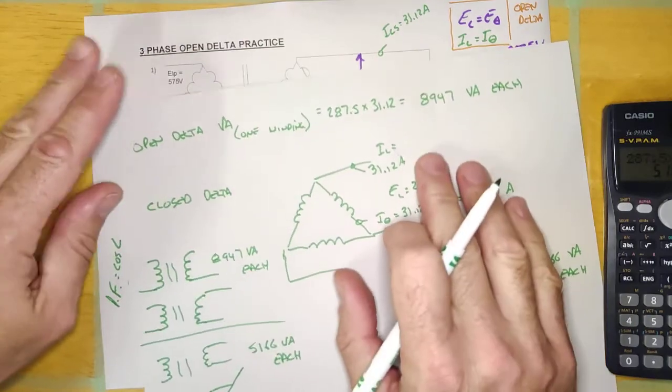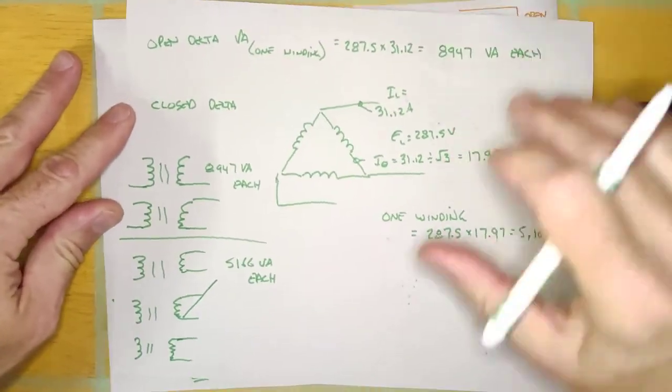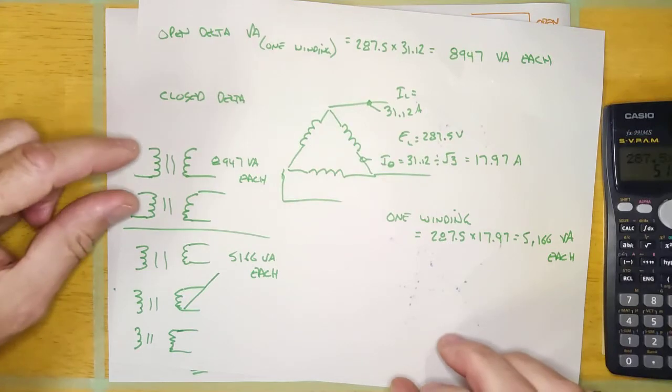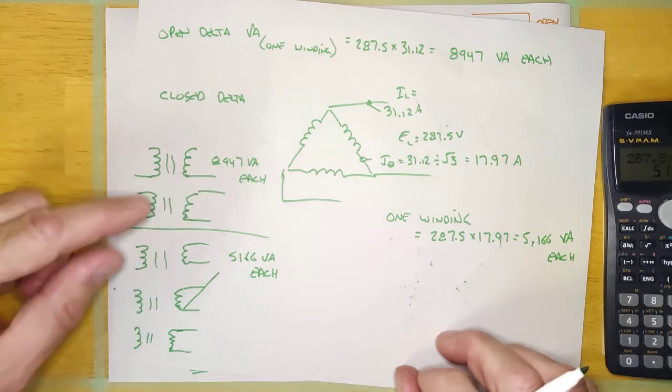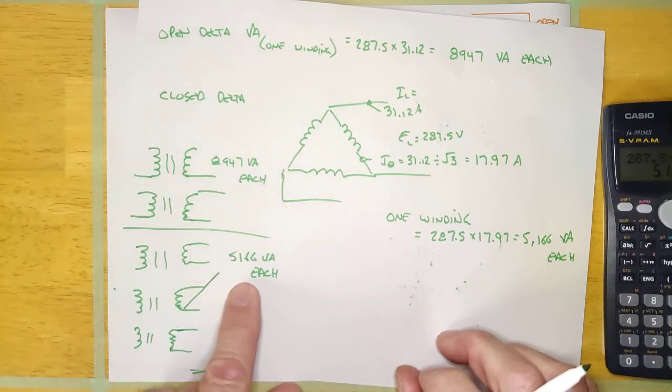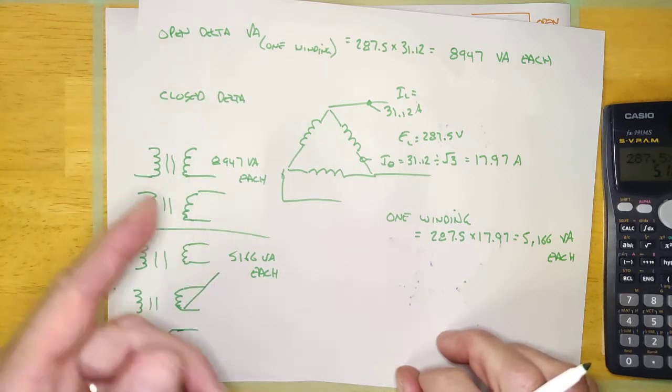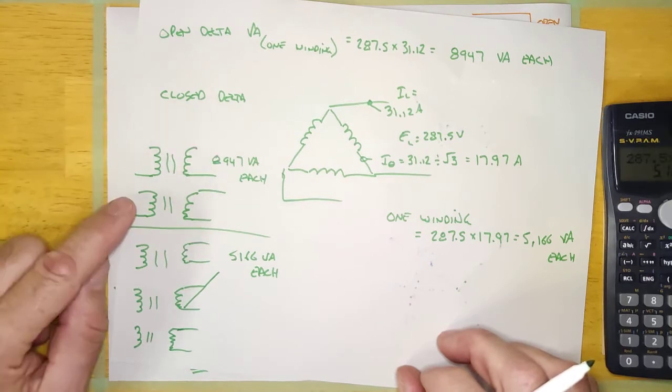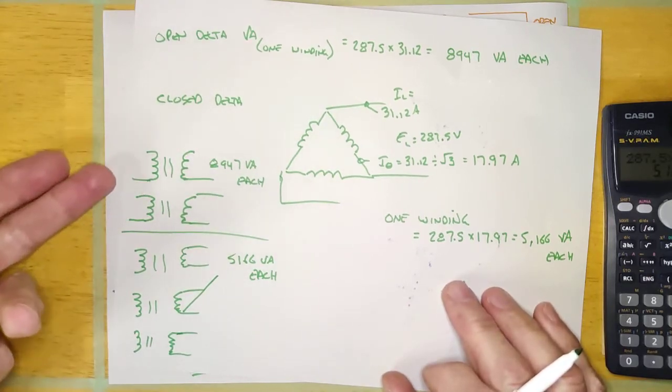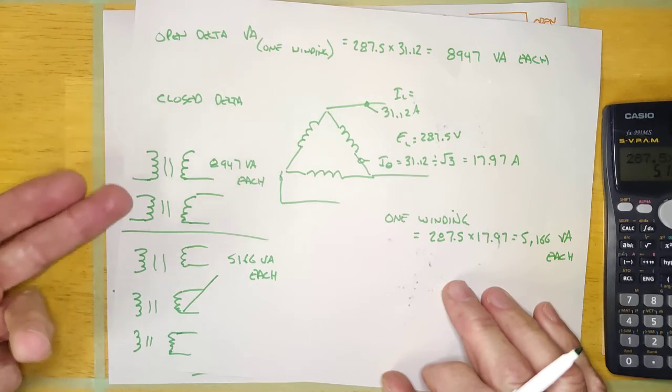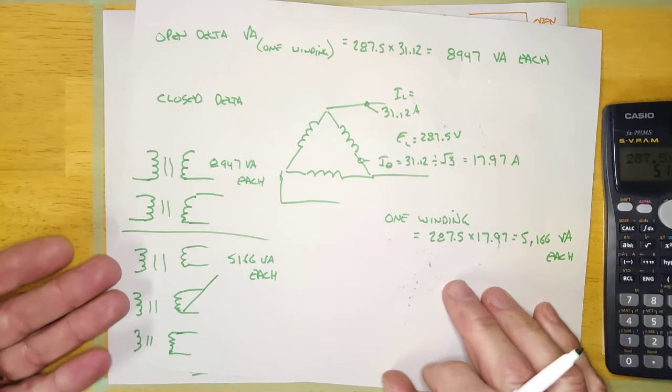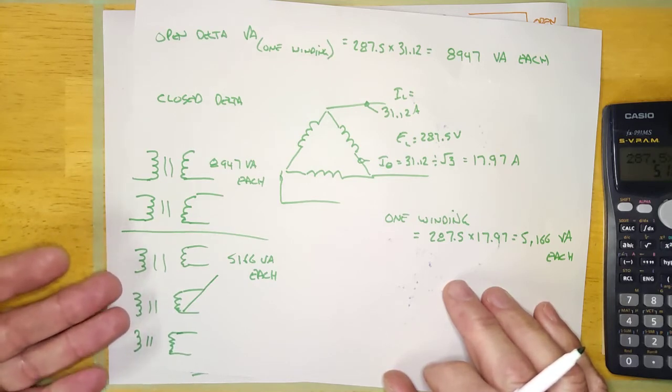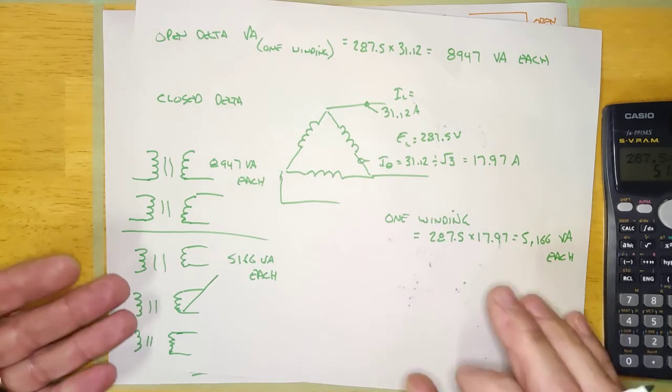It doesn't make any difference and it doesn't know. So the only difference between open delta and closed delta is open delta is two transformers that are big and closed delta is three transformers that are small. And so you're literally going to call the supplier and say, hey, quote me two 9 kVA transformers, single phase transformers, so I can connect my open delta transformer, and quote me three 5,166 VA transformers, three of them, so I can feed my load three phase load.